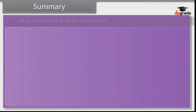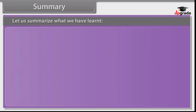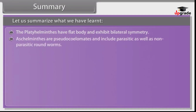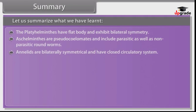Summary: The platyhelminthes have a flat body and exhibit bilateral symmetry. Ascelminthes are pseudocoelomates and include parasitic as well as non-parasitic roundworms. Annelids are bilaterally symmetrical and have a closed circulatory system.